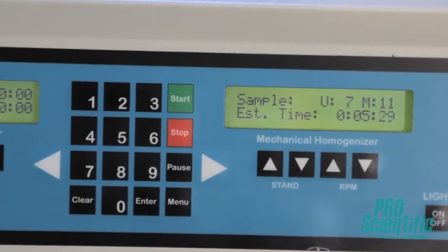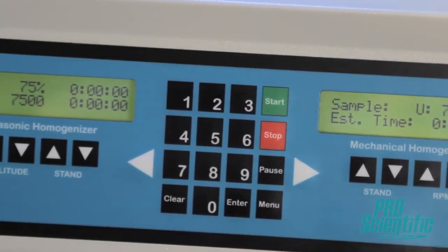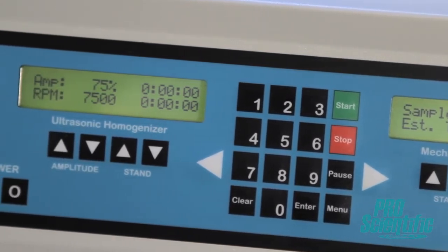It's this last configuration of a revolutionary dual processing homogenizer that I'd like to focus on first. Sample prep becomes even more tedious and cumbersome when you need to break down a large, tough solid to a submicron level because multiple pieces of homogenizing equipment are needed. But the DPS20 combines mechanical homogenizing and sonication, so you only need one compact unit.